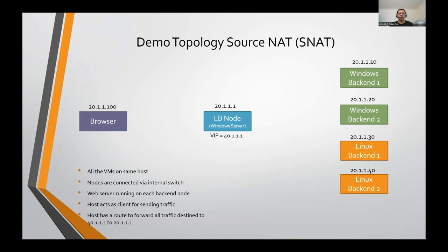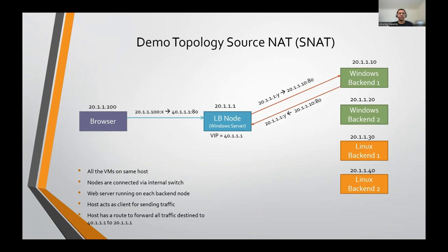For the SNAT scenario, this is how the packet flow looks: the browser sends a request using its source IP 21.1.100, some source port X, destined to 4.1.1.1 port 80. Once the LB node gets this packet, it chooses one of the back-ends. In the SNAT scenario, it source NATs the packet and forwards the request to the chosen back-end, so the packet on the wire has source IP 21.1.1, which is the IP of the LB node. Once the back-end processes the packet, it sends the response back to the LB node, which then does a reverse NAT and sends the response back to the browser.